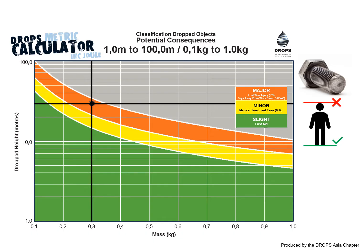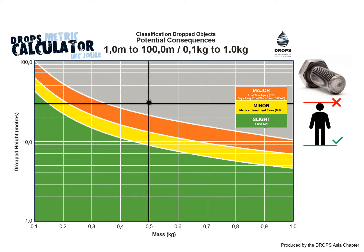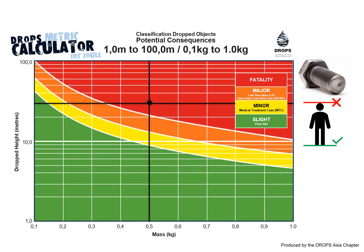But what happens if the bolt weighs 500 grams? If this heavier bolt falls from just 20.6 meters or higher, it creates enough momentum to cause a fatality.